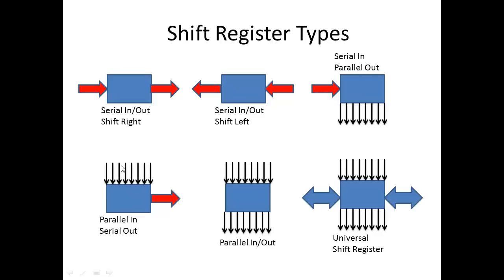Another format is parallel in, serial out — you have eight lines in and one going out. A good example of this is a modem with a dial-up connection. It would bring in parallel data from the computer and send it out one bit at a time while modulating it for the telephone line. On the receiving end, you got one bit in from the telephone line, it would store up, and then send out eight bits into the computer. These are related to the UART inside your serial port.